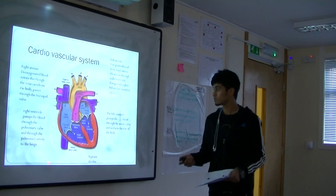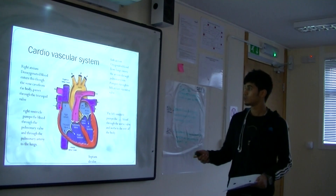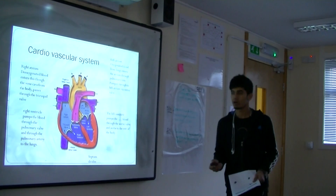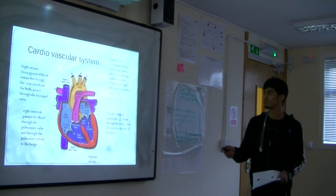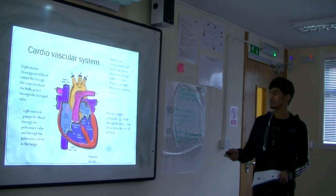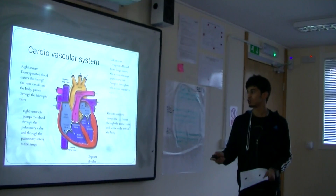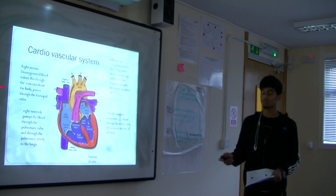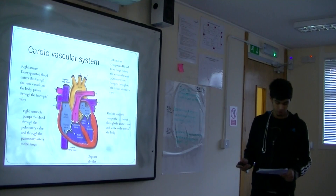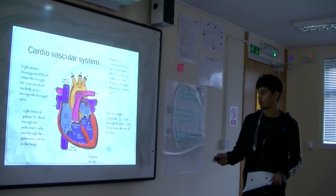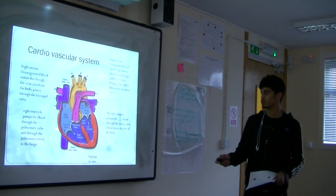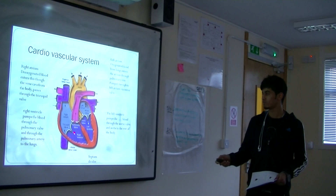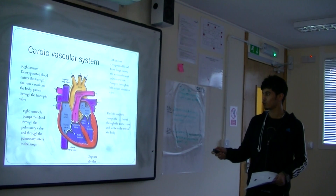The right atrium, as you can see, is here. Blood passes through from the superior vena cava and enters the tricuspid valve, which leads onto the right ventricle. The right ventricle pumps the blood through the pulmonary artery.